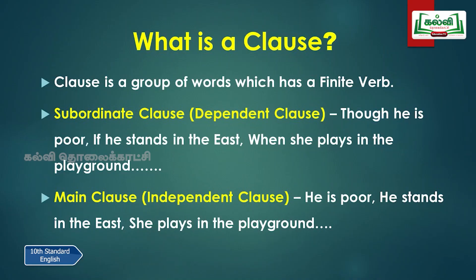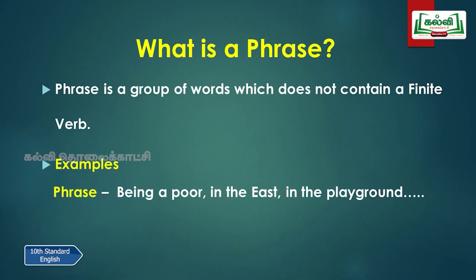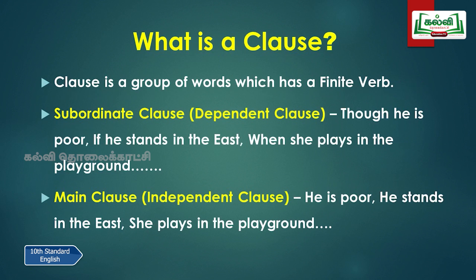'He stands in the East.' 'She plays in the playground.' All of these will act as separate sentences — that is what we mean when we say the main clause is an independent clause. So phrase and clause: a phrase is a group of words without a finite verb; a clause is a group of words with a finite verb. It will be very clear as we go on to see the kinds of phrases and kinds of clauses.